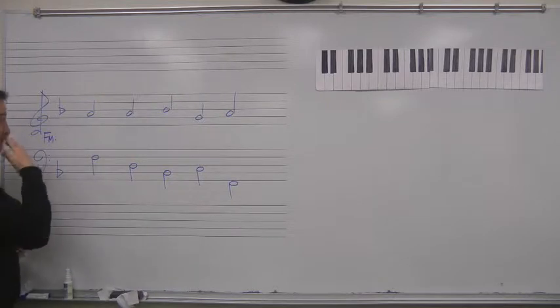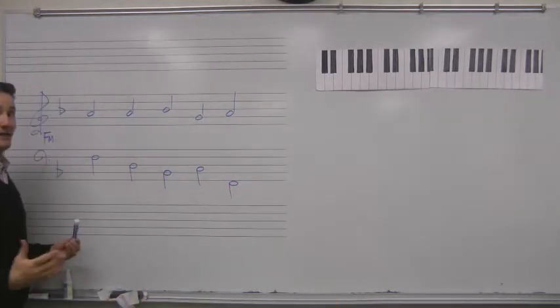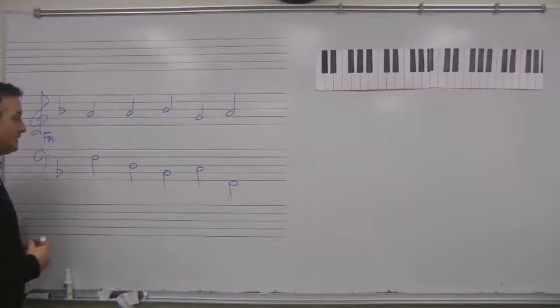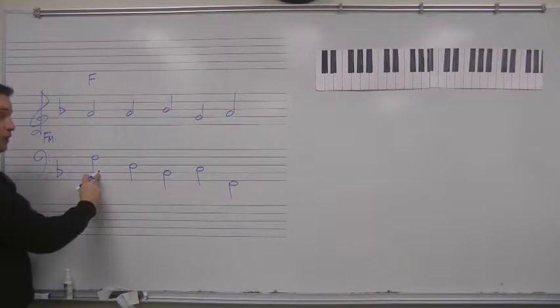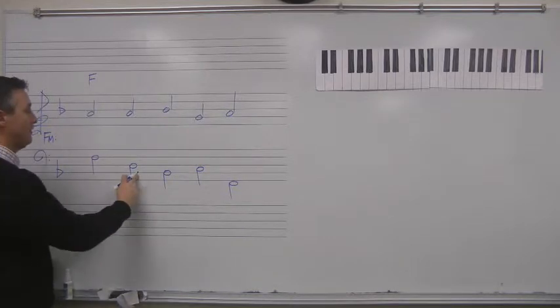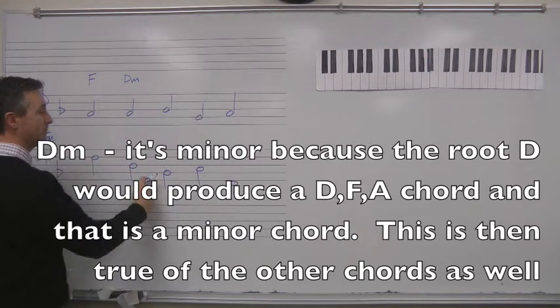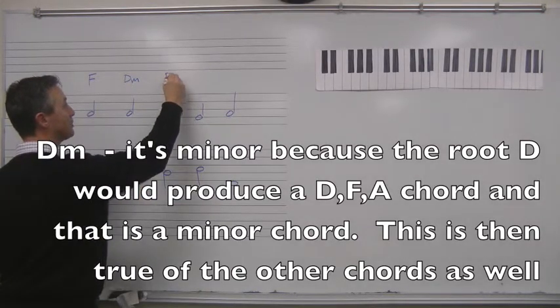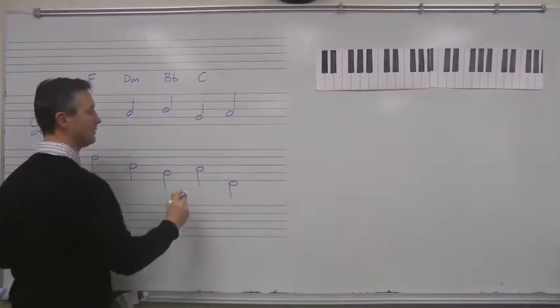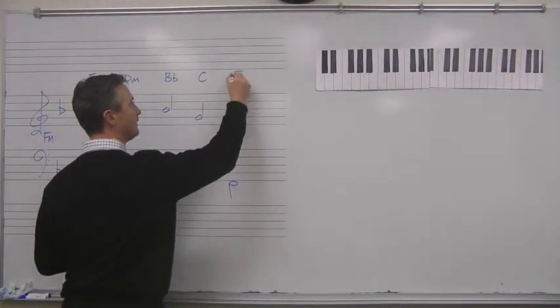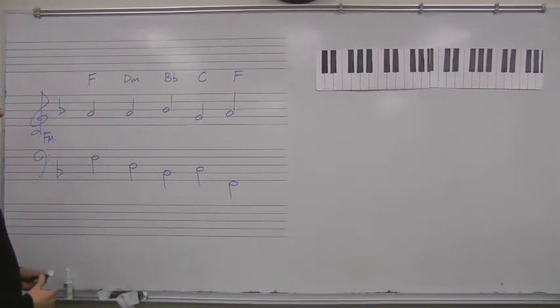Now, if we're in F major, because these are root position chords, we should be able to go through and actually identify what each chord is. This must be an F chord, because that's the root of the chord. This must be a D minor chord. This must be a B flat major chord. Remember, there's a flat in the key signature, so B flat. This must be a C major chord. This must be an F chord at the end. Really, it makes perfect sense. That's a good solid progression.